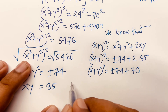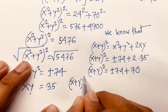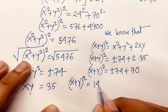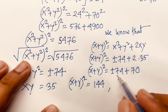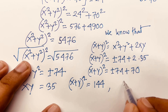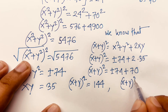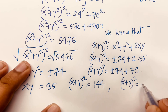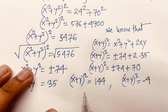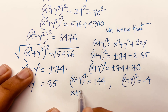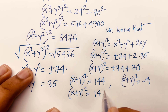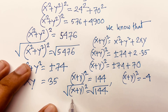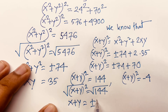We find that (x + y)² equals 74 plus 70, which is 144. I use both sides square root. So I can say x plus y equals plus or minus 12.